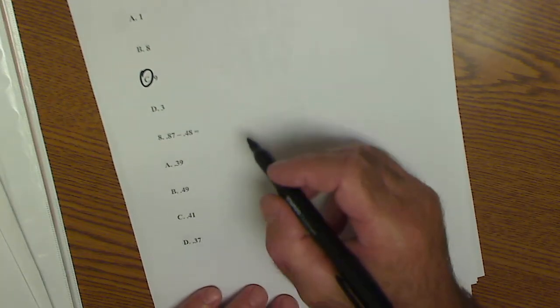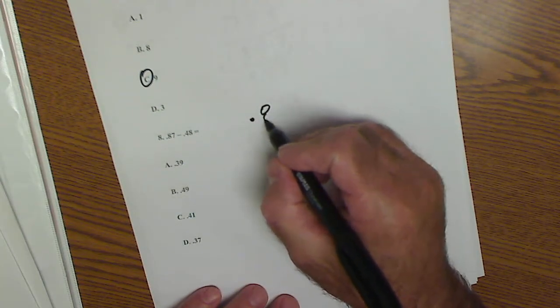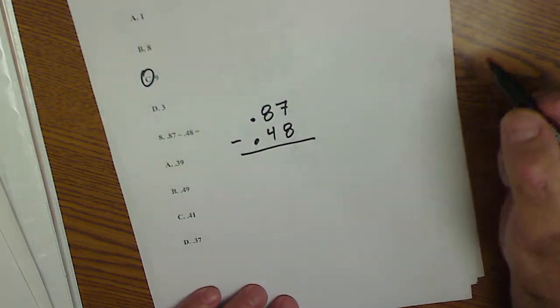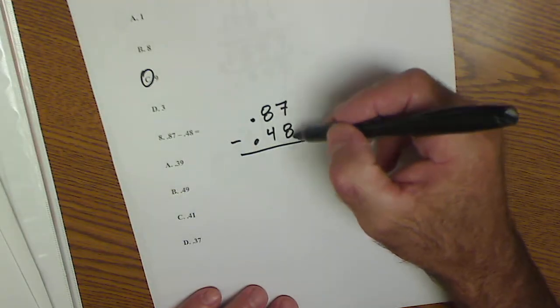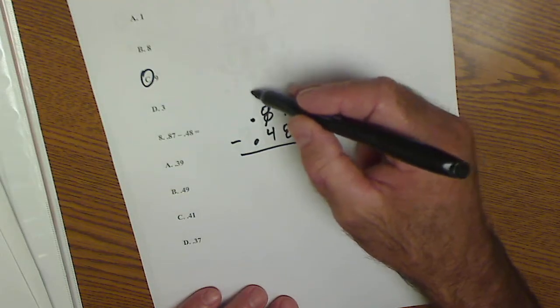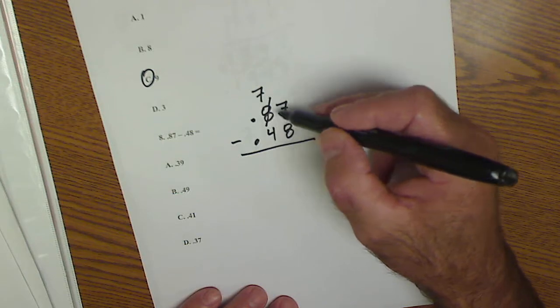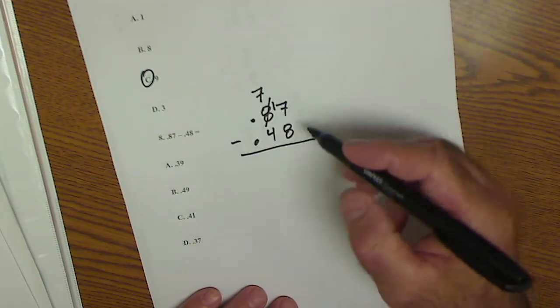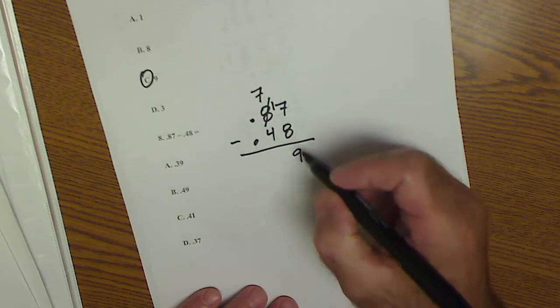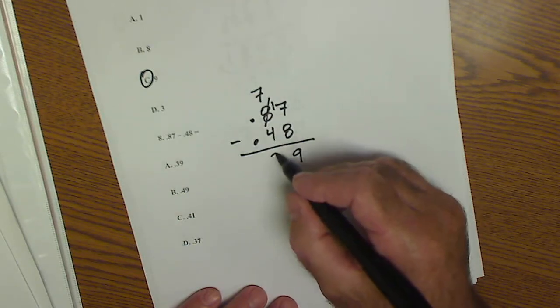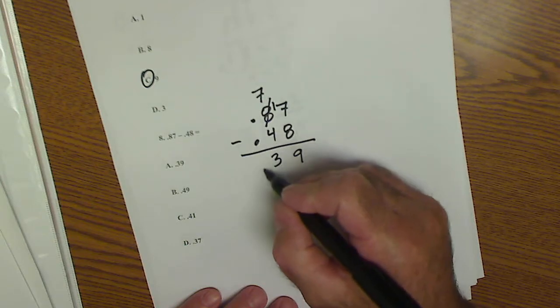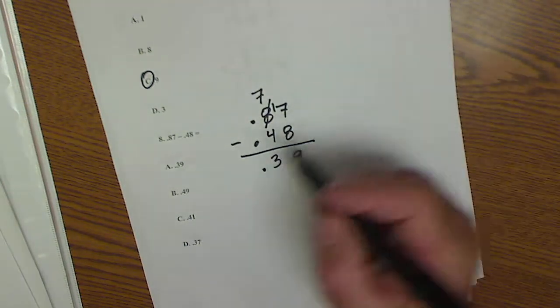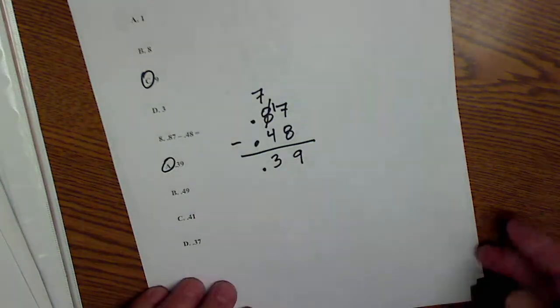Number 8, subtracting fractions: 0.87 minus 0.48. So this is about borrowing. I can't go 7 minus 8, so I have to borrow 10 from here. So that 80 becomes 70, and then this becomes 17. 17 minus 8 is 9. 7 minus 4 is 3. Those decimal places are lined up for adding and subtracting. And I end with 0.39. So number 8 is 0.39.